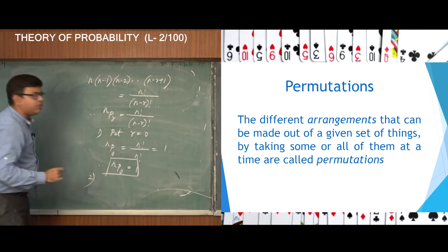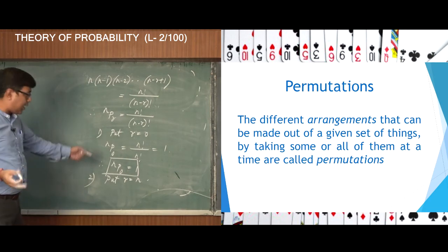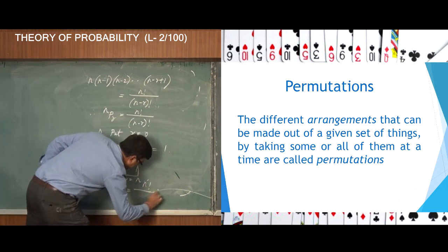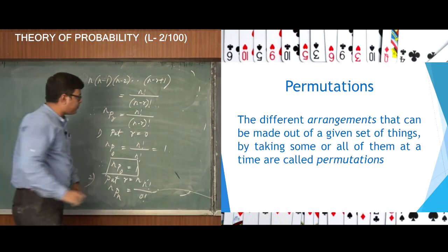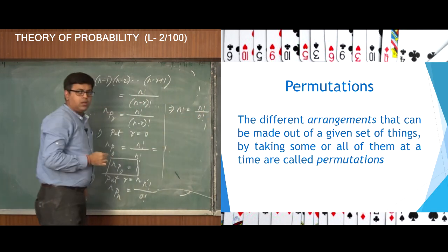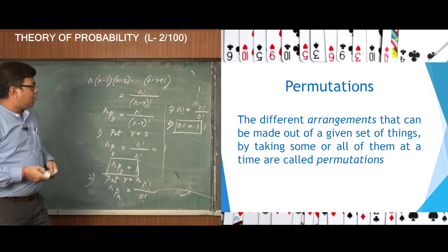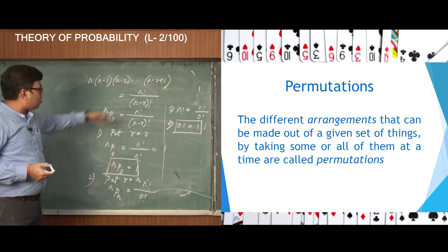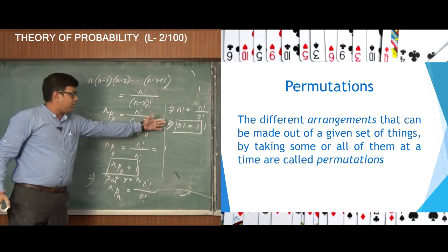The second interesting case: put r equal to n. Then nPn equals n factorial divided by 0 factorial. But we already know nPn equals factorial n, so n factorial equals n factorial divided by 0 factorial. This implies 0 factorial equals 1. Though 0 factorial has no inherent meaning, we define factorial 0 to be equal to 1 for further calculations. So nP0 equals 1 and 0 factorial equals 1.